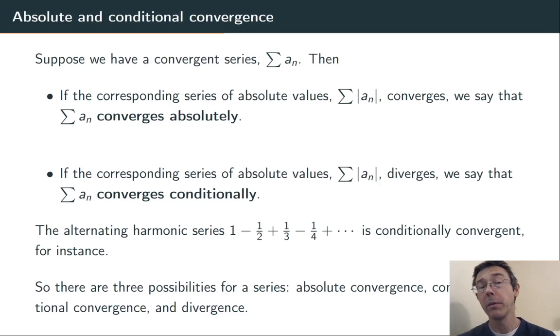Overall, there's now three possibilities for an infinite series. It can converge absolutely, converge conditionally, or it could just plain diverge.